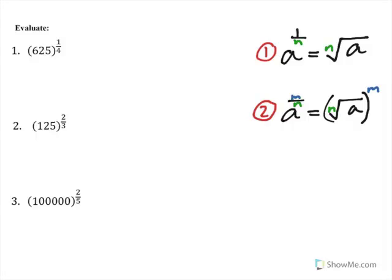The first question: we've got 625 raised to the power of a quarter. We're going to use rule number one, which is a to the power of one over n equals the nth root of a. So in this case, n is 4, so it's the fourth root of 625, which looks challenging, but it's not that bad.